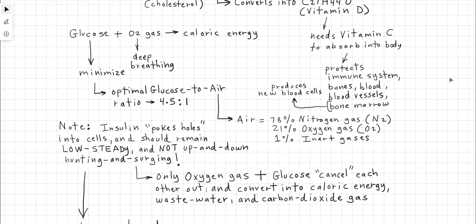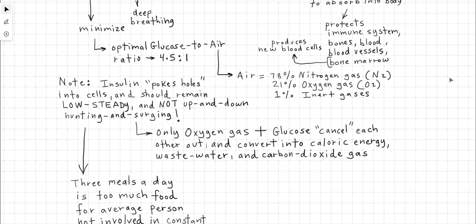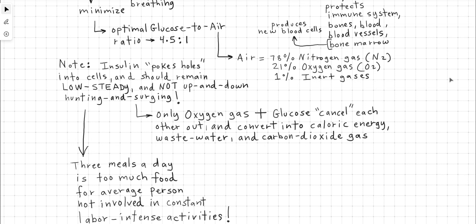Insulin is there not to convert glucose into caloric energy, but insulin is only there to allow oxygen and glucose to permeate into the cell. Insulin behaves much like glass pieces in the bloodstream and pokes holes into cells. If you have a surge of insulin, this will then result in insulin shock and will kill you. And that's when your heart rate goes up to 160, 180. An insulin overdose will kill you. So insulin should be very low and steady, produced out of the pancreas. Only oxygen gas and glucose cancel each other out and convert into caloric energy.